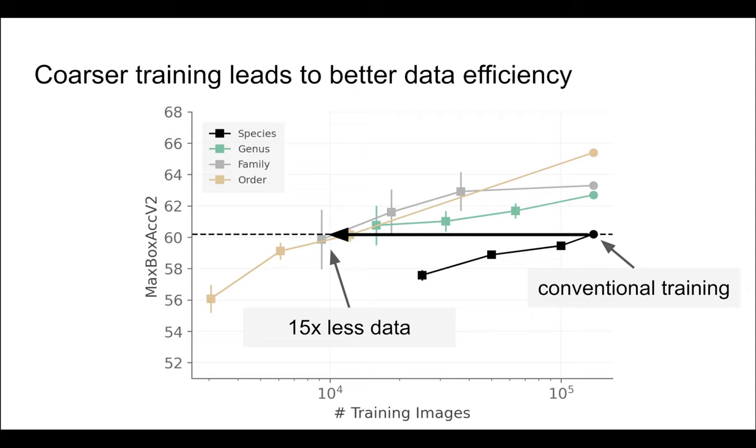Coarser labels are also cheaper to obtain because they require less expertise. It is much easier to tell a bird from a reptile than it is to tell apart two bird species.